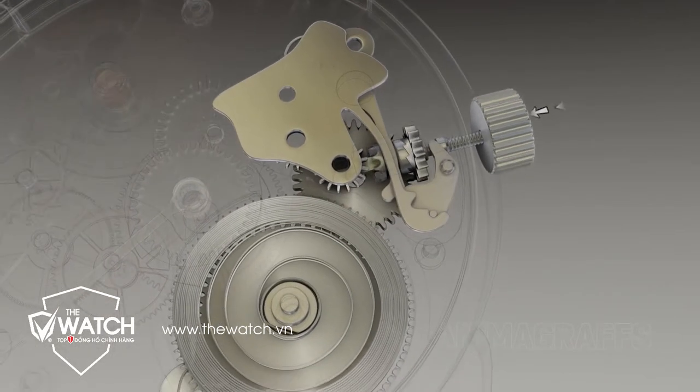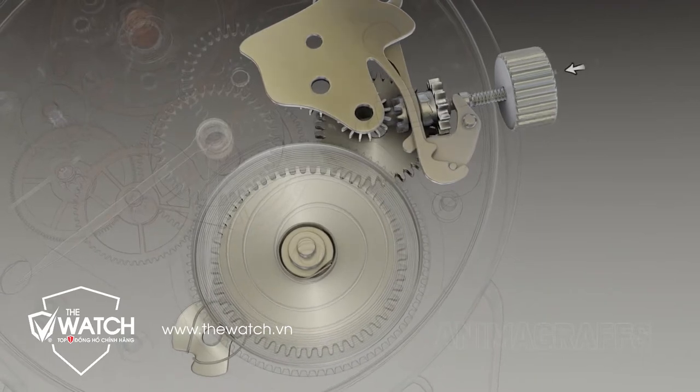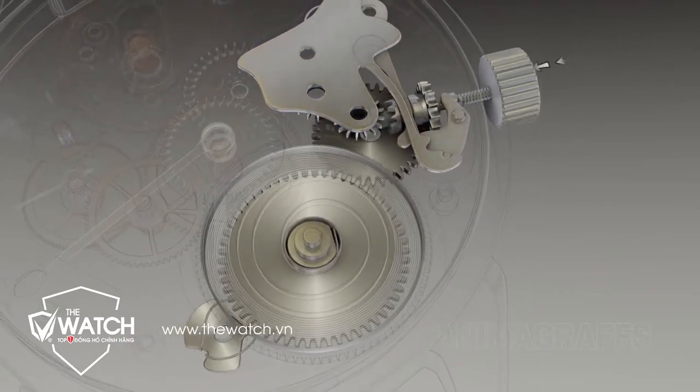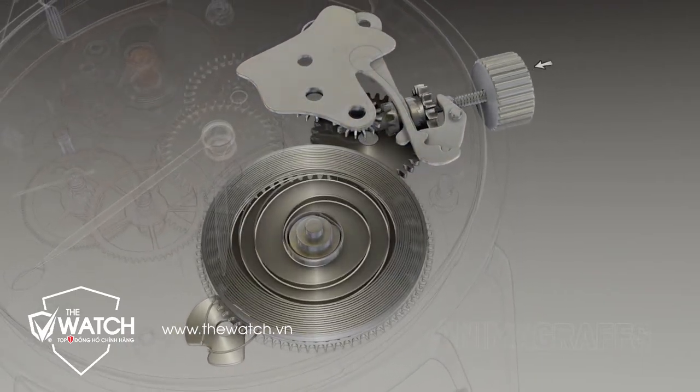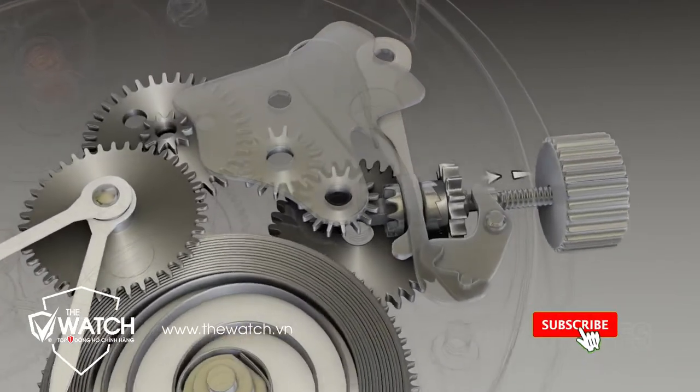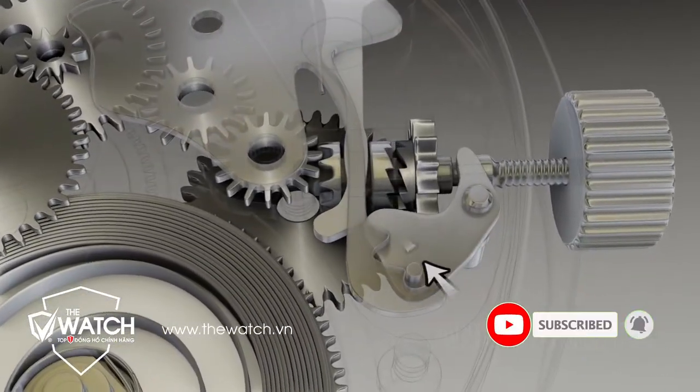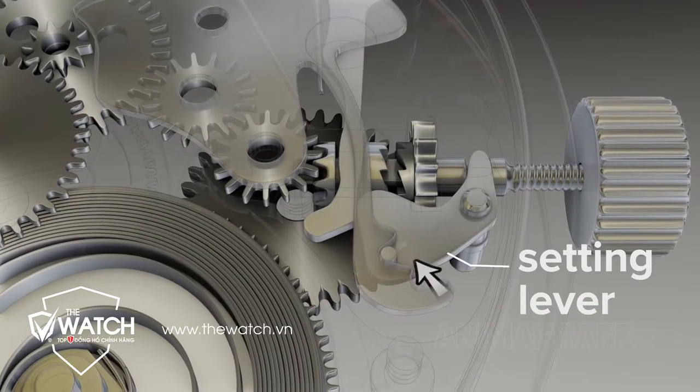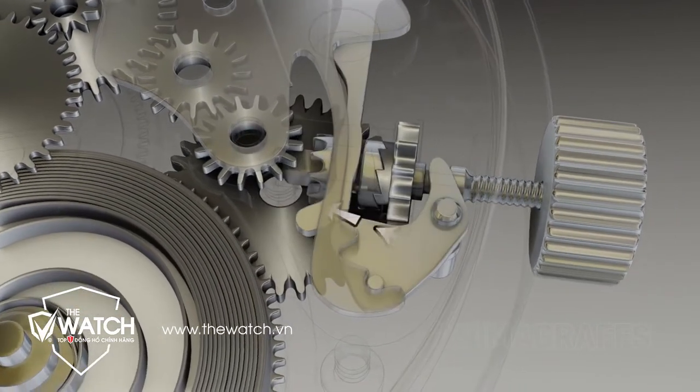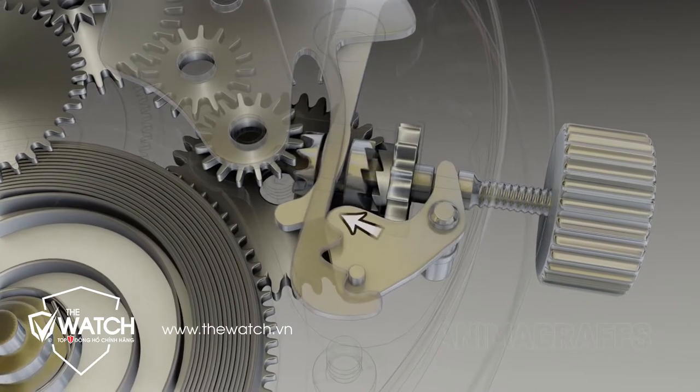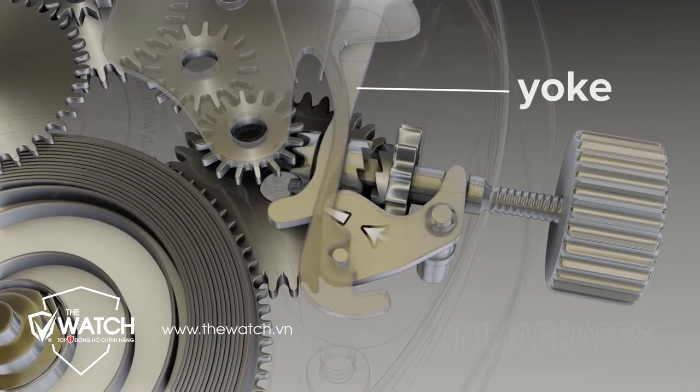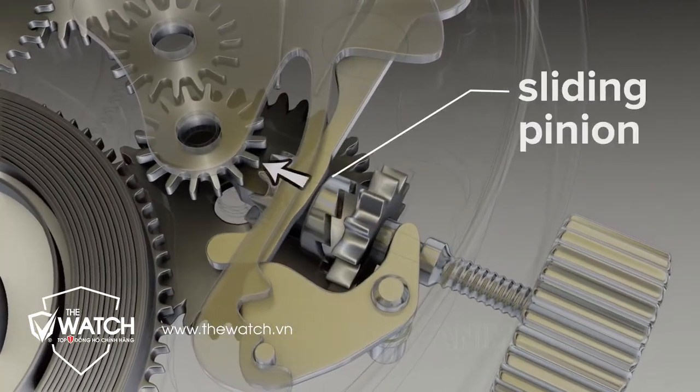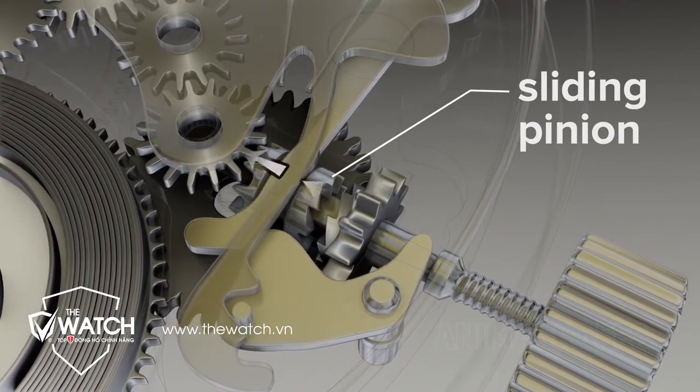When the crown is pushed in for winding, the sliding pinion meshes with the set of gears connected to the mainspring. The crown is pulled out to set the time. When the crown is pulled outwards, the setting lever clicks into the second indent in the rigid setting jumper. At the same time, this setting lever presses against the spring-loaded yoke. The yoke moves the sliding pinion into connection with time setting gears.